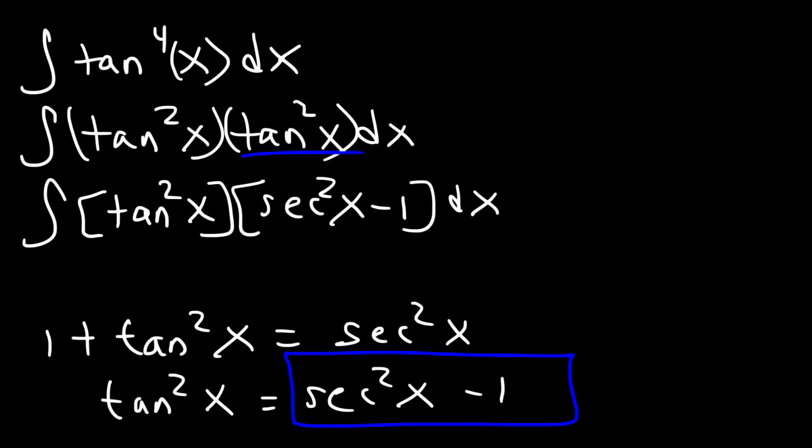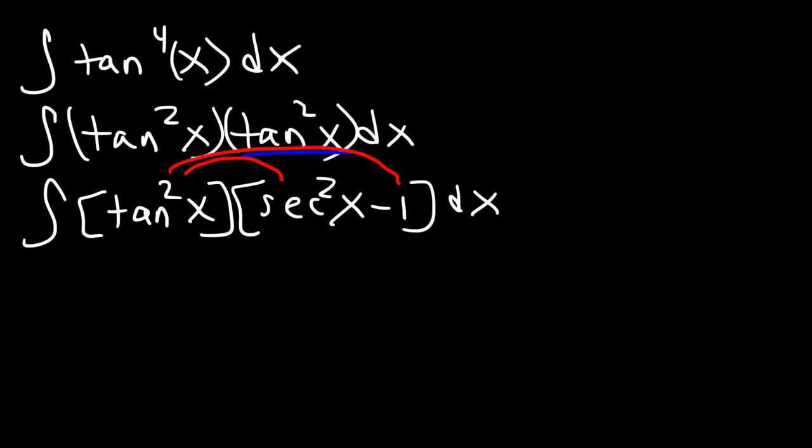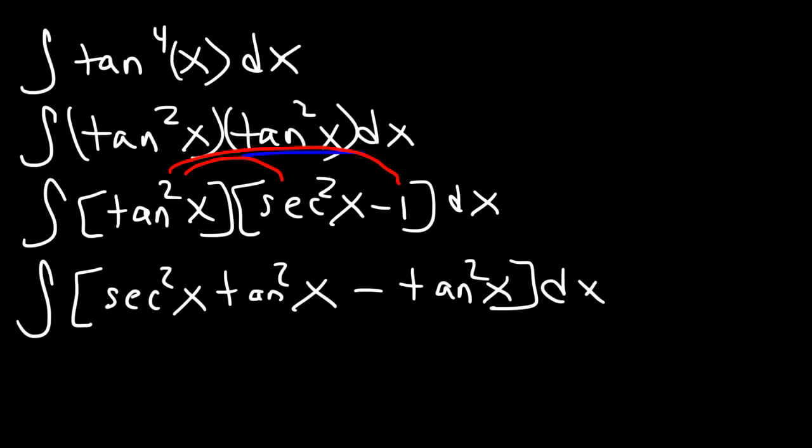Now what you want to do at this point is distribute tan squared to secant squared and to negative 1. So we're going to have the integral of secant squared tan squared minus tangent squared. The next best thing to do is to separate this problem into two separate integrals.